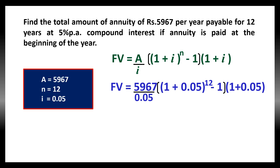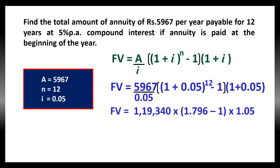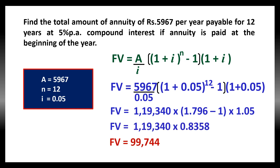Applying the values in the formula: FV = (5,967 / 0.05) × [(1 + 0.05)^12 − 1] × (1 + 0.05). When we solve it, we get the answer as 99,744 rupees. That means, if that person is paying 5,967 every year at the beginning of the year for 12 years at 5% per annum compound interest, then at the end of the 12th year the future value will be 99,744 rupees. That is how we calculate the future value of an annuity.